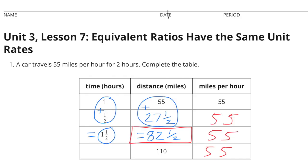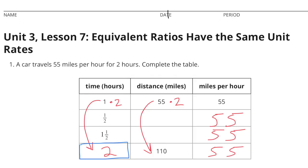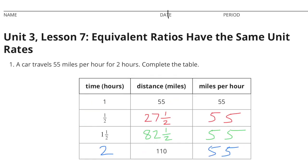To find 1.5 hours, just add 1 hour plus a half hour equals 1.5 hours. So add 55 miles plus 27.5 miles, and you'll have 82.5 miles. A distance of 110 miles is double 55 miles. So I multiplied 55 by 2 to get 110, and multiplied 1 times 2 to give me 2. So in 2 hours, the distance traveled would be 110 miles. Here's a look at the completed chart.